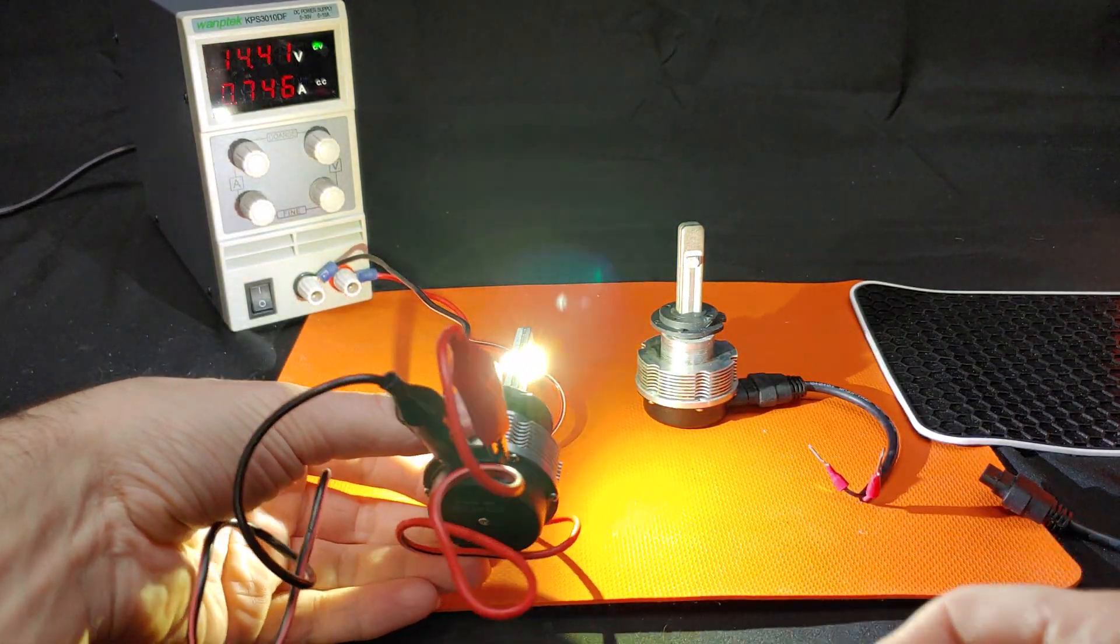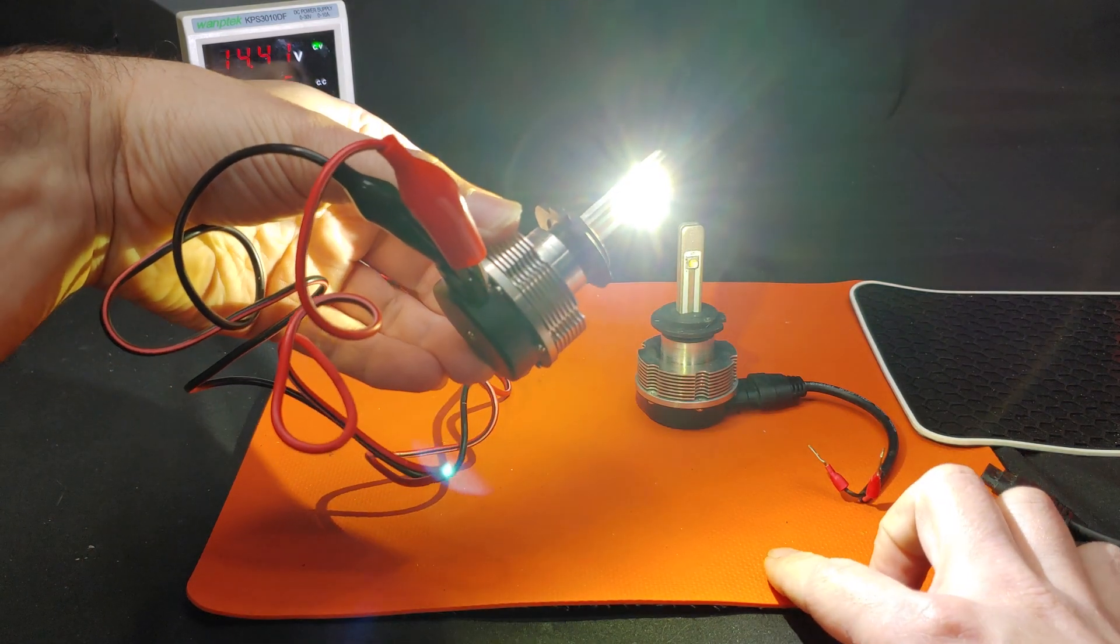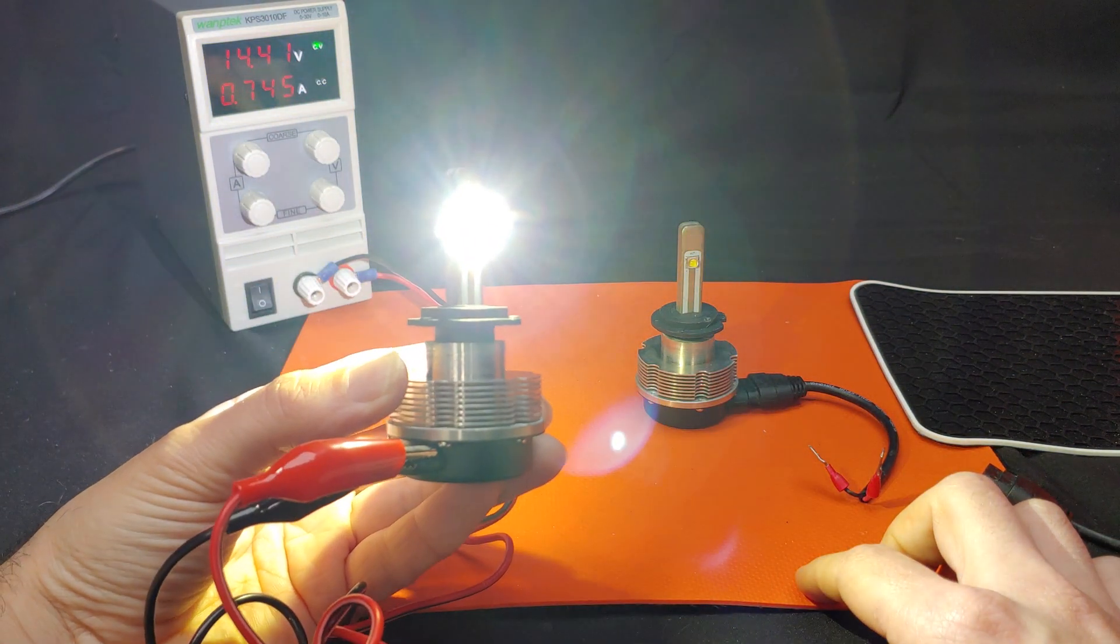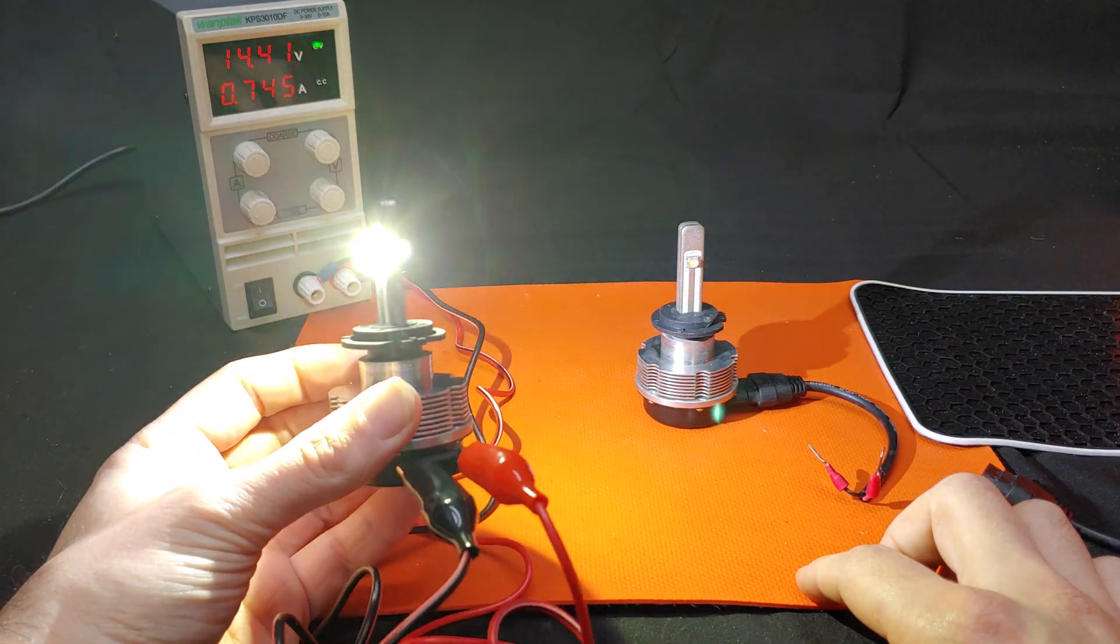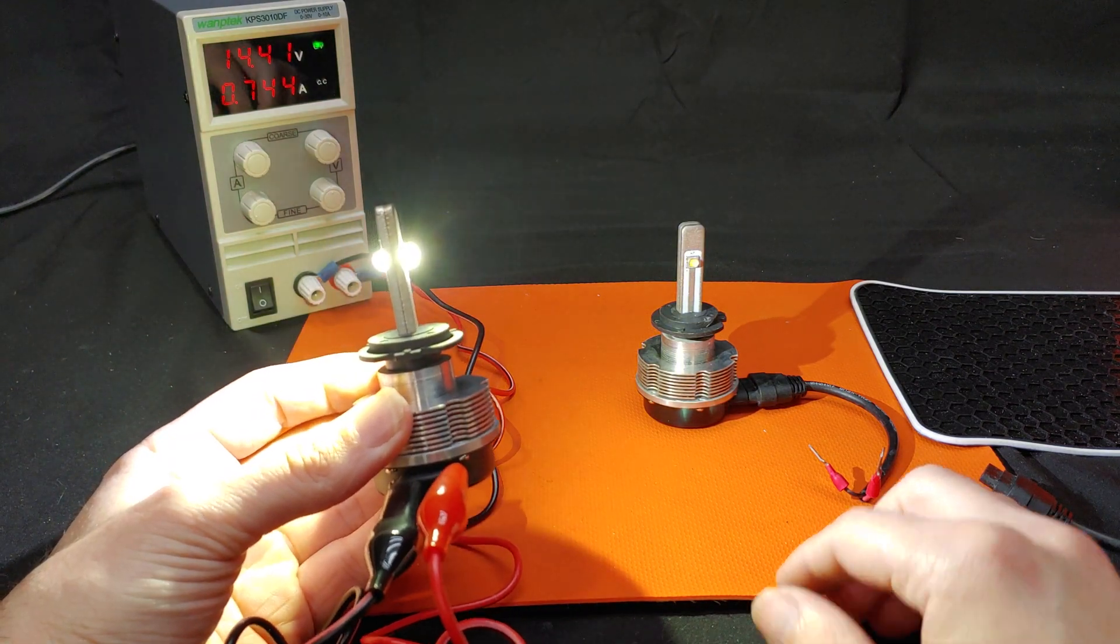This does significantly reduce this shadow area at a distance, but the overall brightness, being only 10 watts, is pretty low. Let's grab our light measuring box and take a look.